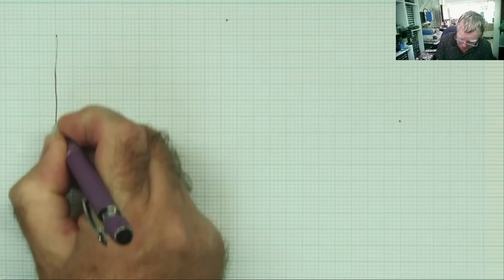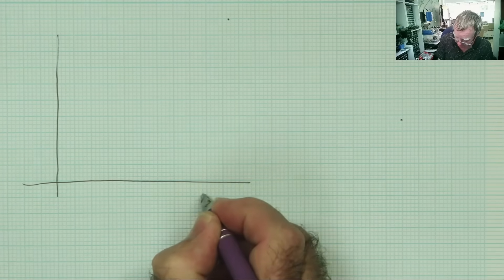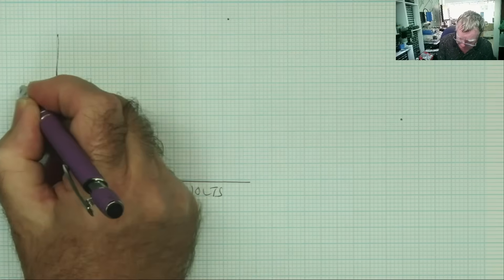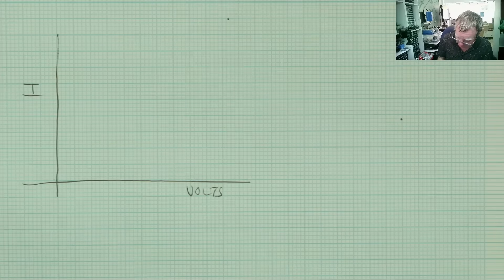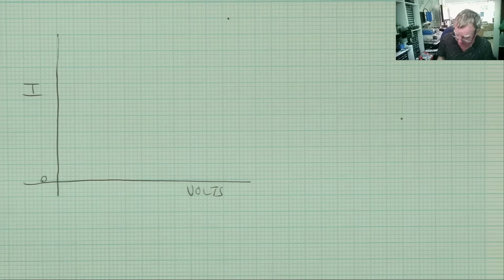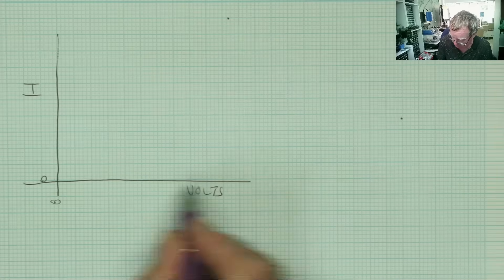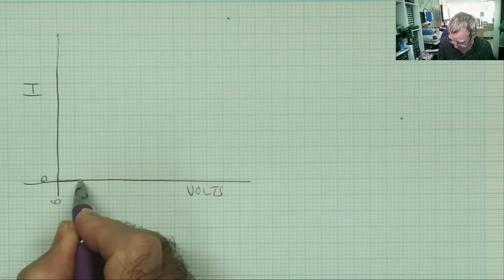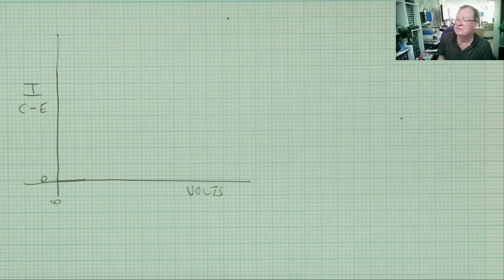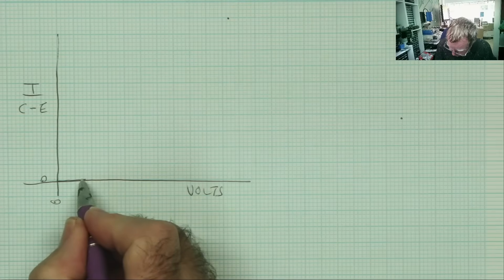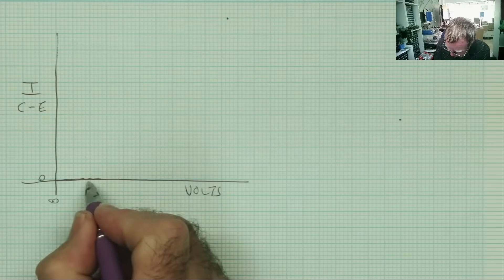So if we draw a basic graph, very basic. This is volts, and this is current, and I'll put I because I can't be bothered to write current. And this is zero. And then as we increase the voltage from zero, the current flowing from the collector to emitter, ICE, is zero, is zero because the base has got no volts on, so the transistor is switched off. It's switched off at 100 volts, it's switched off at 200 volts, it's switched off.